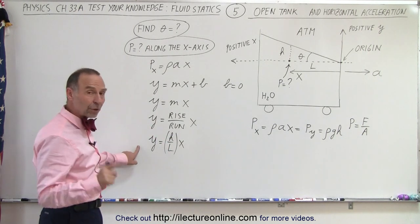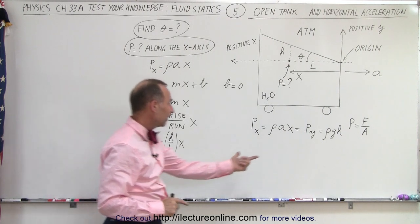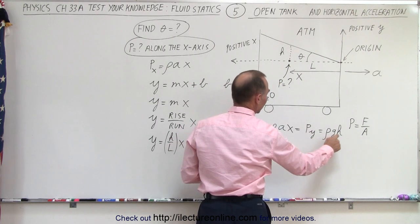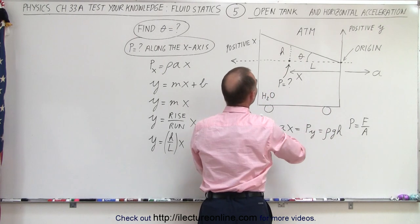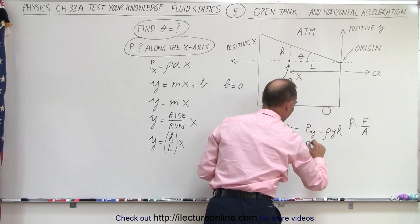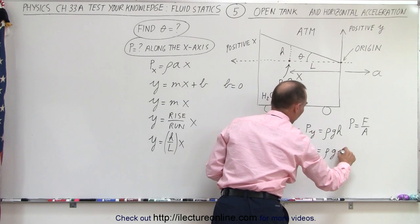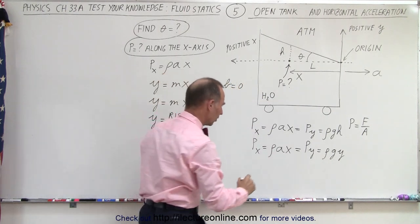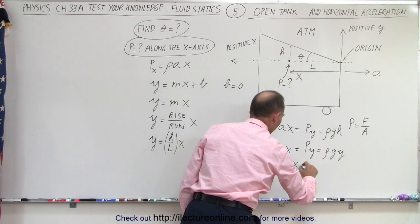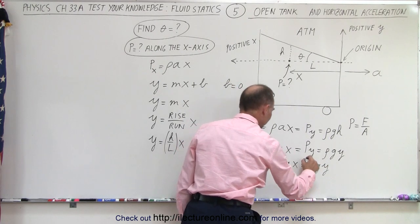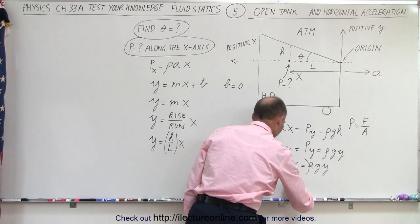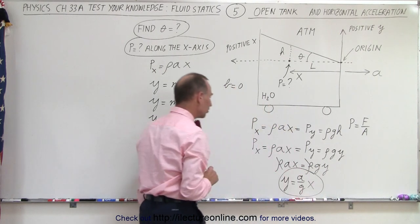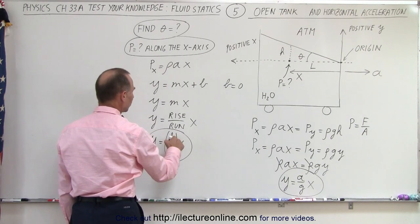Now we make a relation between these two expressions. Instead of h we write y, and instead of l we write x. So P_y = ρ·g·y and P_x = ρ·a·x, and we know they're equal to each other. Setting them equal: ρ·a·x = ρ·g·y. Since the density cancels on both sides, we get y = (a/g)·x.